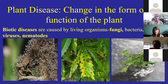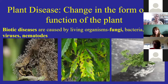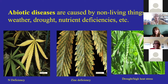Biotic diseases are caused by living organisms like fungi, bacteria, viruses, and nematodes — so things like botrytis, leaf spot diseases, and some viruses. The other kind is abiotic disease, which I see a lot of in the plant diagnostic clinic. It's caused by non-living things: weather, drought, nutrient deficiencies, and things like that. We see an awful lot of abiotic issues.